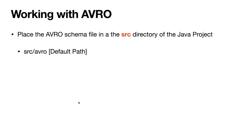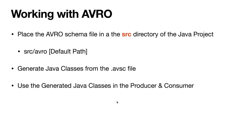The default path is going to be source/avro. The next step is to generate the Java classes from the .avsc file. And then we would use the generated Avro classes in the producer and consumer to produce and consume messages. So let's go back to IntelliJ, and I will quickly explain the build.gradle file.